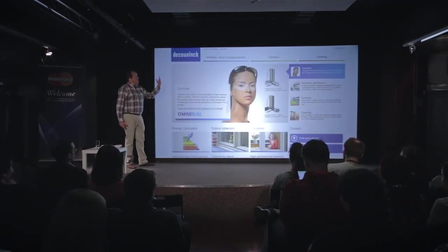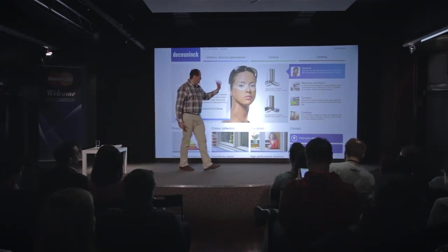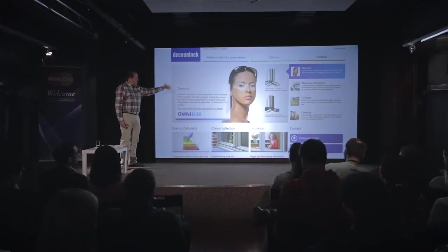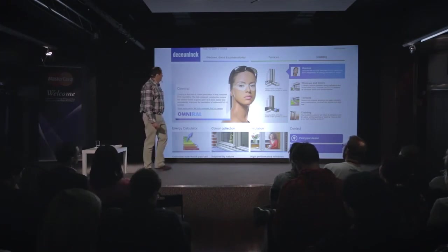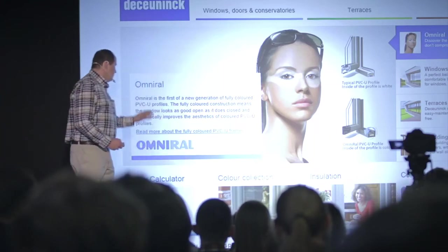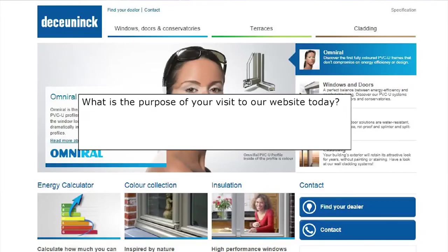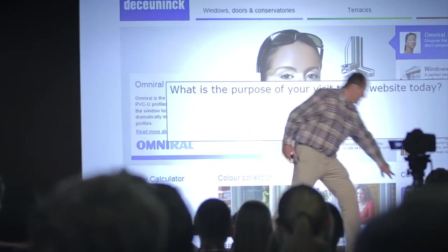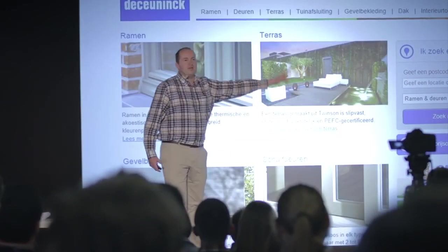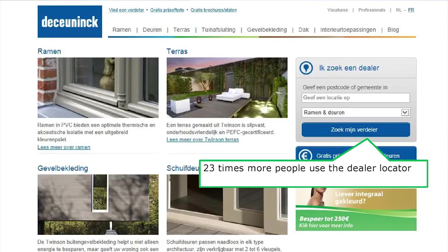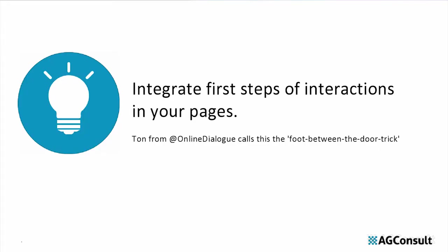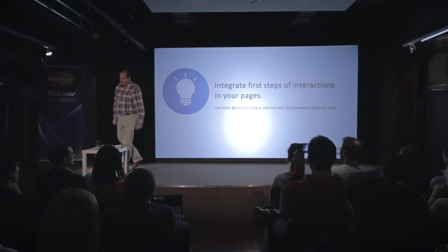This is Governing, a manufacturer of doors, windows, and terraces — related to Neutech, in the UK and Belgium. They're a manufacturer, so they don't sell the stuff themselves. We asked people what they were looking for on the website, and the top task number one was: where can I buy your stuff, where is the nearest dealer? So instead of just having a button pointing to a dealer locator, we integrated the dealer locator directly on the homepage. The result: 23 times more people using the dealer locator. It's always better to integrate the first step of an interaction than just putting a button pointing to a form.